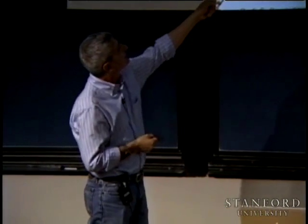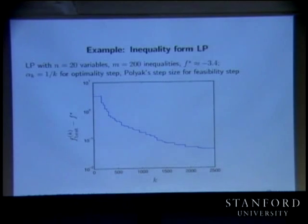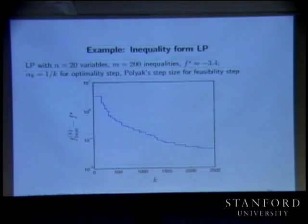This would be an example of the convergence of f minus f star. Since f star is minus 3.4, this is not bad.